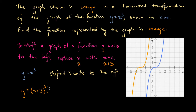So y equals x plus 3, all cubed — that is the function represented by the graph in orange, because the orange graph is 3 units left of the blue graph. The orange graph is constructed by shifting 3 units to the left, and from our rule, to do that we replace x with x plus 3 in the original functional form.